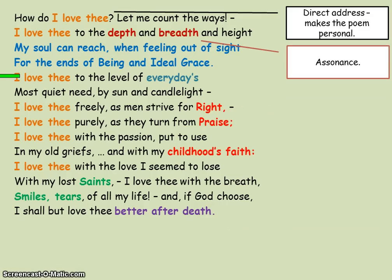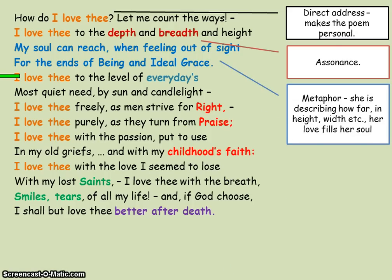We carry on with assonance in the next line: 'I love thee to the depth and breadth and height.' You can almost hear this rhythm going on. That's because of the structure — it's the iambic pentameter. 'Depth and breadth' — that's assonance, when the vowel sounds rhyme. It's that 'eh' vowel sound. And then we have a metaphor here. This is all about how she's describing her love — she's almost giving her love a size, showing how much she loves him.